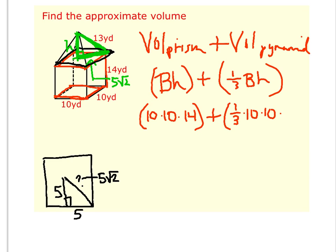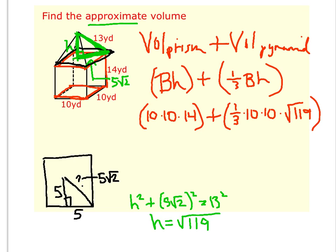So down here I am going to set up h squared plus five root two squared equals thirteen squared. Now, if you are solving for h, notice in the directions that it's approximate. So go ahead and when you're solving for h, just round your answer. h is equal to the square root of 119. And actually, I'm not going to round my answer until I plug it back in over here. So I'm going to leave h as the square root of 119 when I put it into my formula.